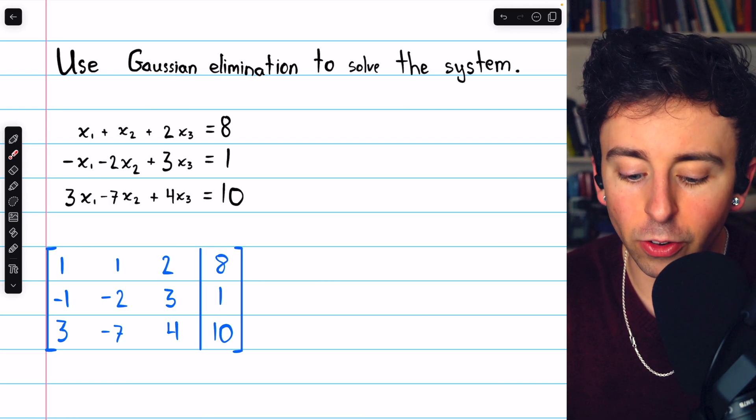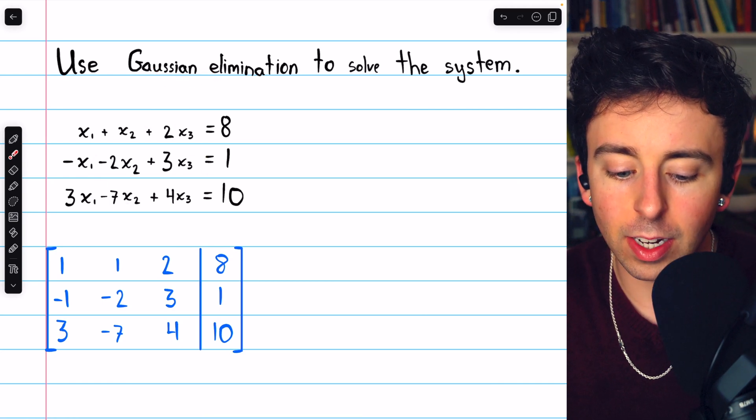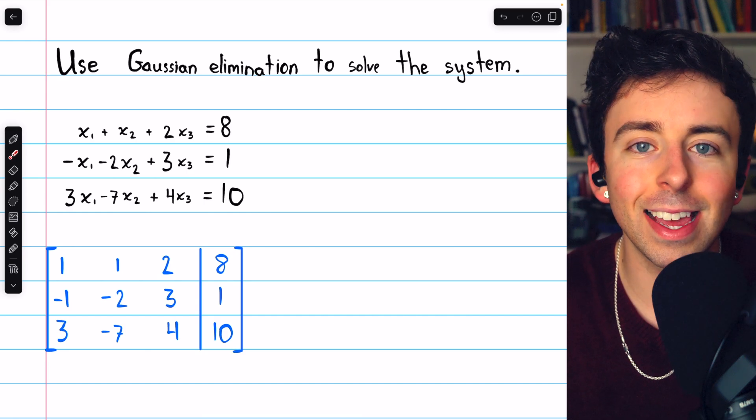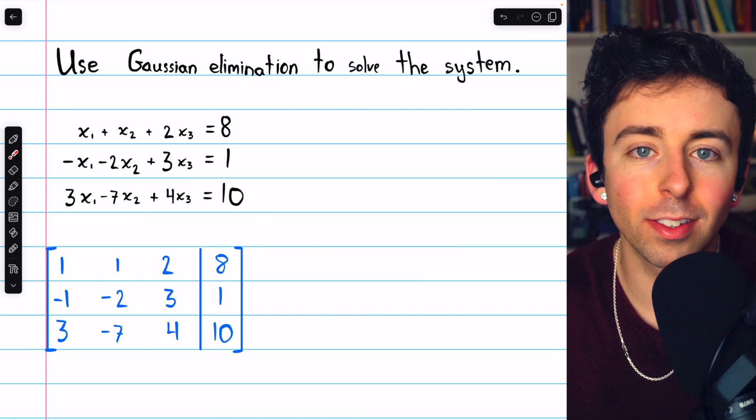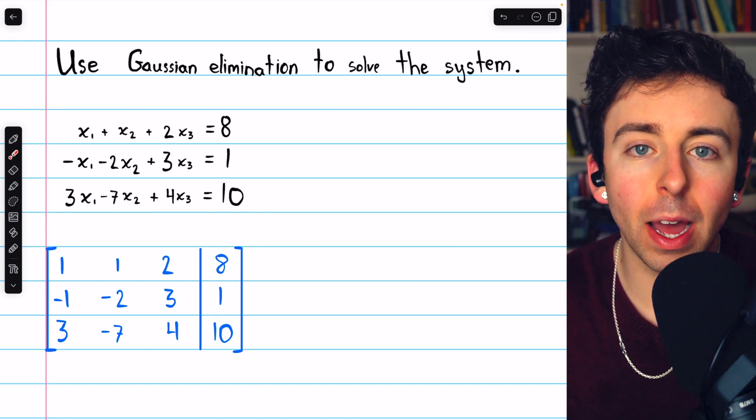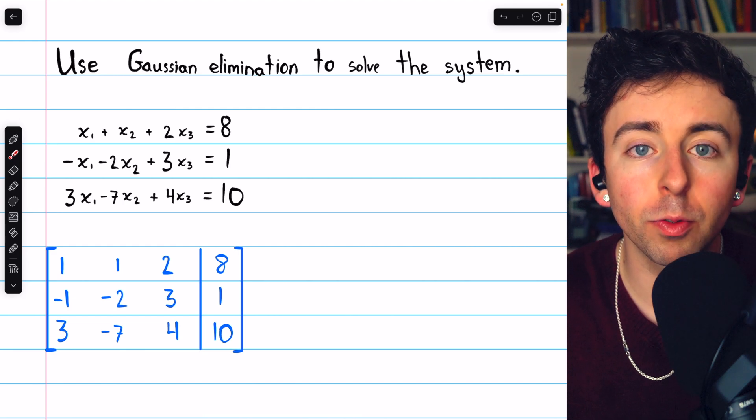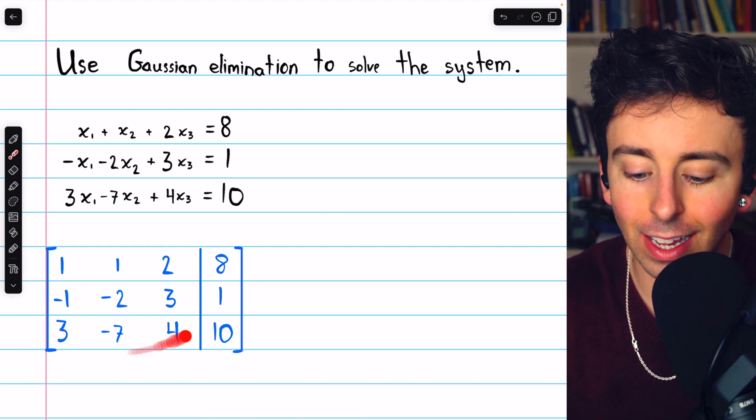We're going to use Gaussian elimination to solve this system of linear equations and as we'll see it has exactly one solution. We have to begin by writing the augmented matrix for the system and that looks like this.